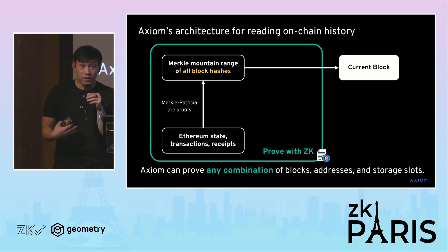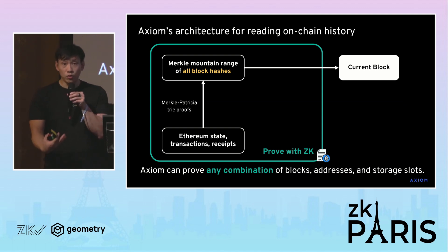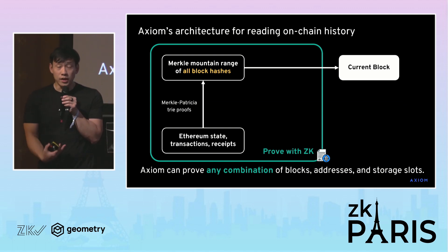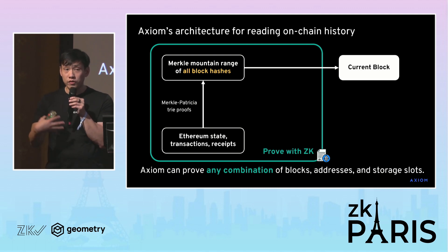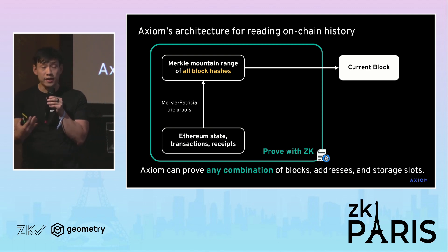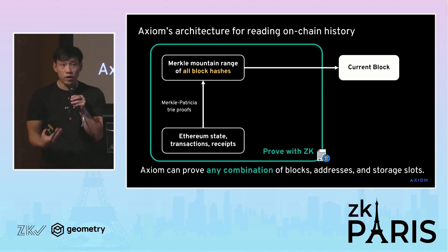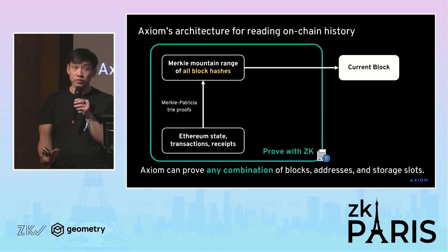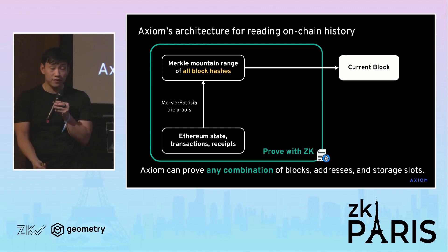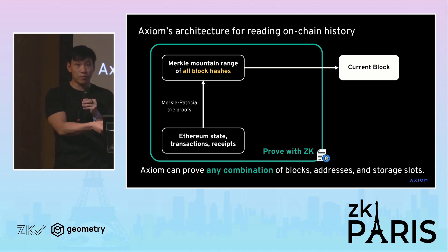When we actually fulfill queries into the history of Ethereum, we always query against this cache of block hashes. That means we verify Merkle-Patricia trie proofs of historic states, addresses, and storage slots into the cache of block hashes.